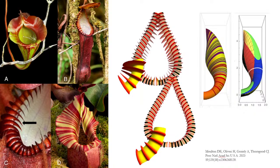We found that different shapes and sizes — we predict using mathematics — mean that insects will behave differently. We looked at Newtonian mechanics and how they fall from the surface, and found that they behave very differently. There are lots of different shapes and sizes of Nepenthes because they probably trap different types of insects in their different environments.